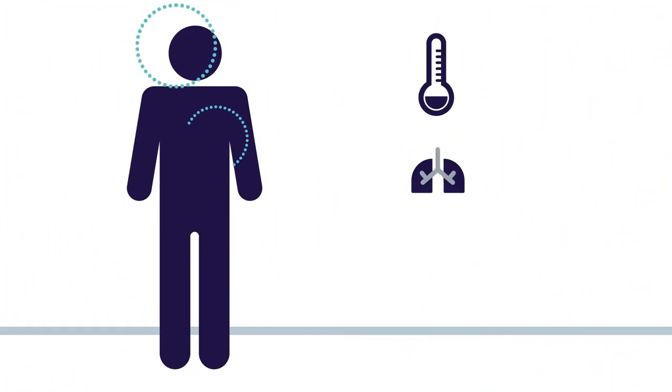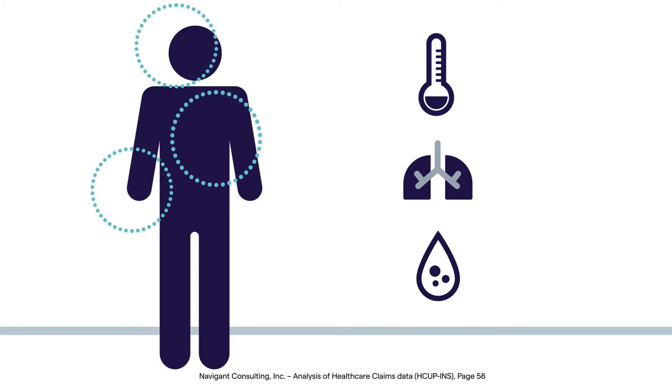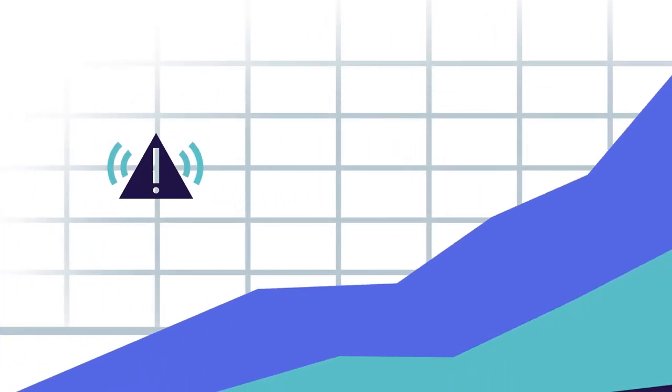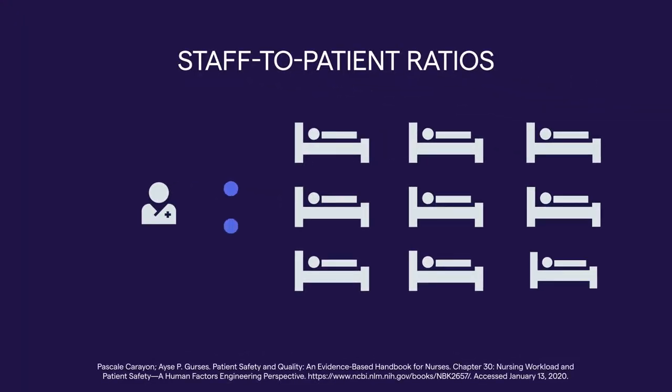In today's general care areas, predicting patient deterioration is more critical than ever. Risk factors and comorbidities are increasing, and patient acuity levels are rising on general care floors, while staff-to-patient ratios are not.